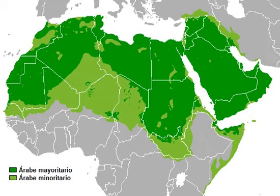Arabia boasted a wide variety of Semitic languages in antiquity. In the Southwest, various Central Semitic languages both belonging to and outside of the ancient South Arabian family were spoken. In the oases of Northern Hejaz, Dadanitic and Tamanitic held some prestige as inscriptional languages. In Najd and parts of Western Arabia, a language known to scholars as Thamudic C is attested. In Eastern Arabia, inscriptions attest to a language known as Hasaitic.